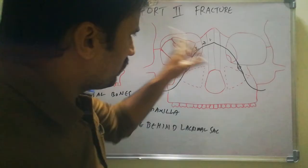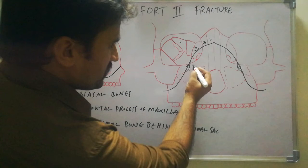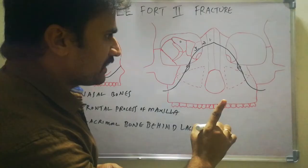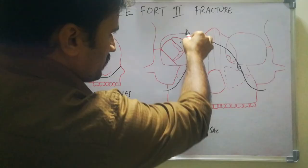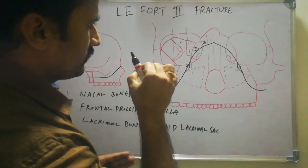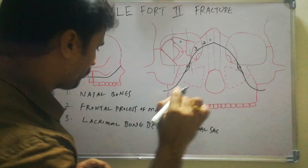After fracturing the lacrimal bone, the fracture line crosses forwards and it crosses the inferior orbital rim. It fractures the inferior orbital rim approximately at the junction of its middle one-third and lateral two-thirds. That is the fourth landmark.